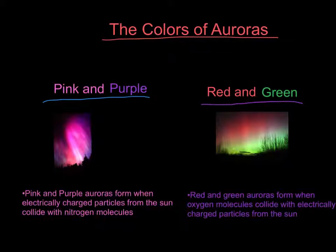Auroras can come in two sets of different colors. The first set of different colors is pink and purple. Pink and purple auroras form when electrically charged particles from the Sun collide with nitrogen molecules.